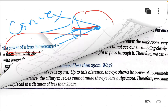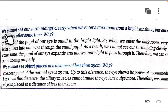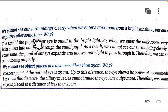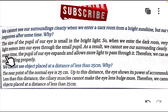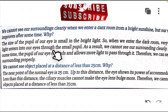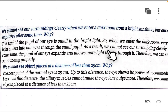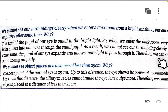Next question: we cannot see our surroundings clearly when we enter a dark room from bright sunlight, but our vision improves after some time — why? The answer is that the size of the pupil of our eye is small in bright light, so when we enter the dark room, only a very small amount of light enters our eyes through the small pupil. As a result we cannot see our surroundings clearly, but after some time the pupil of our eye expands and allows more light to pass through, so we can see properly.